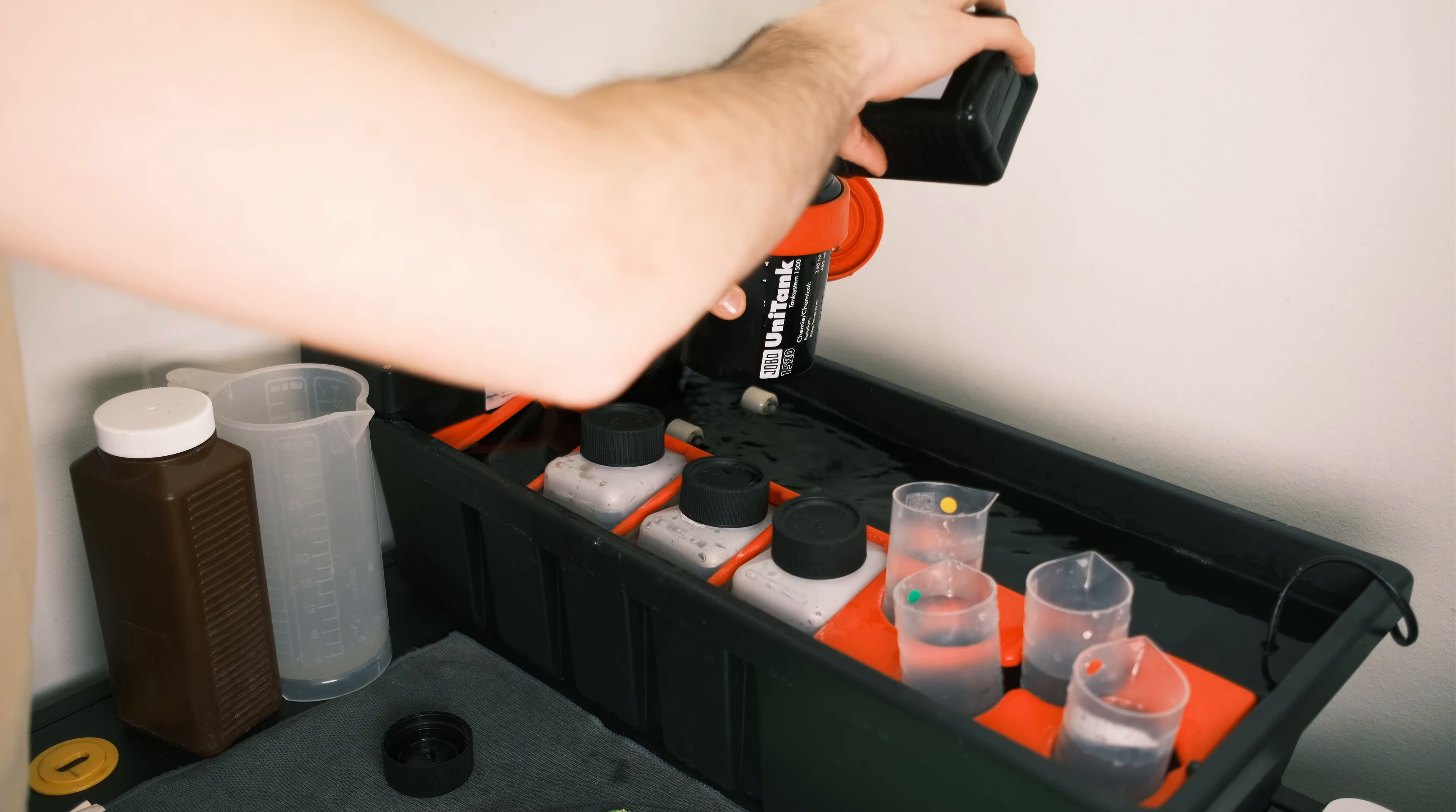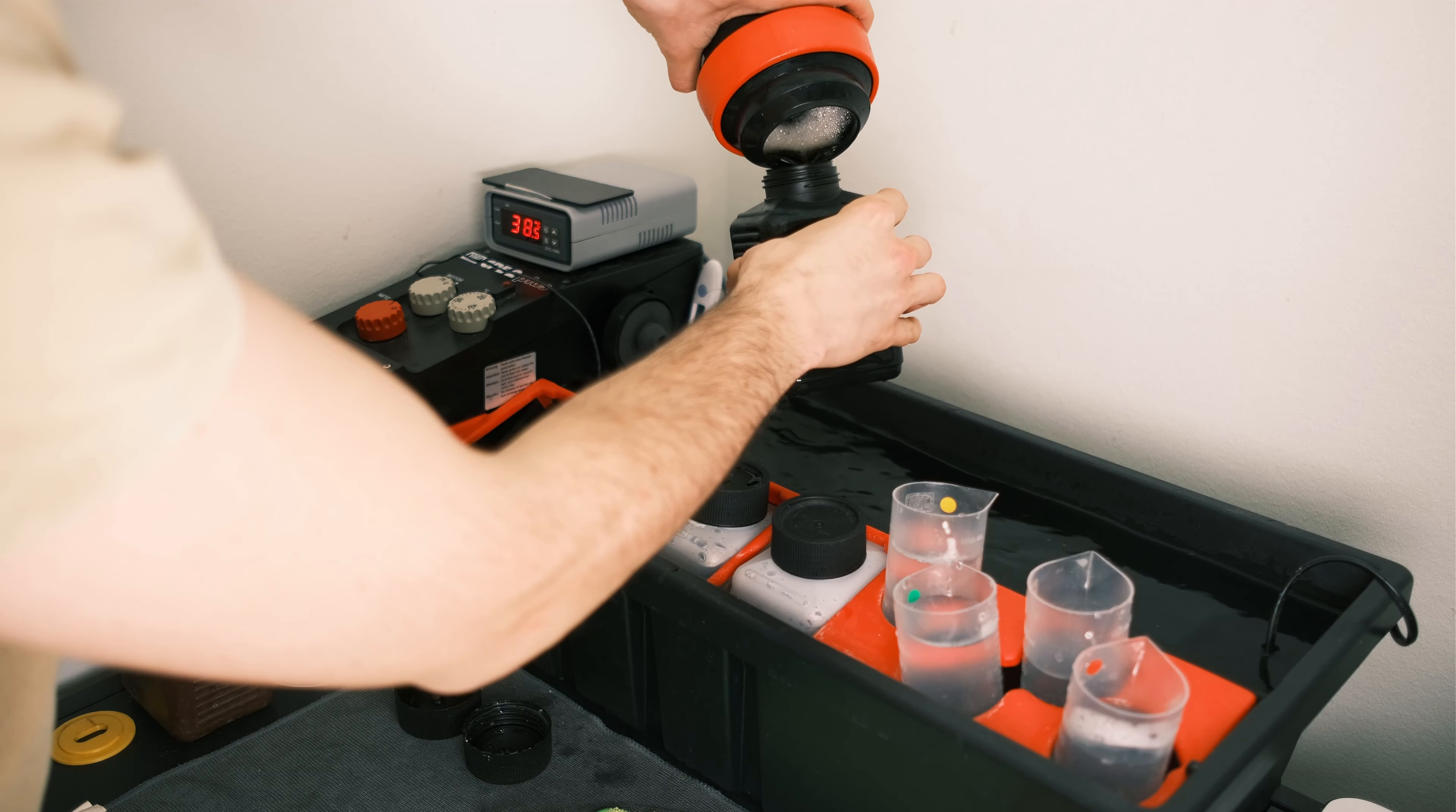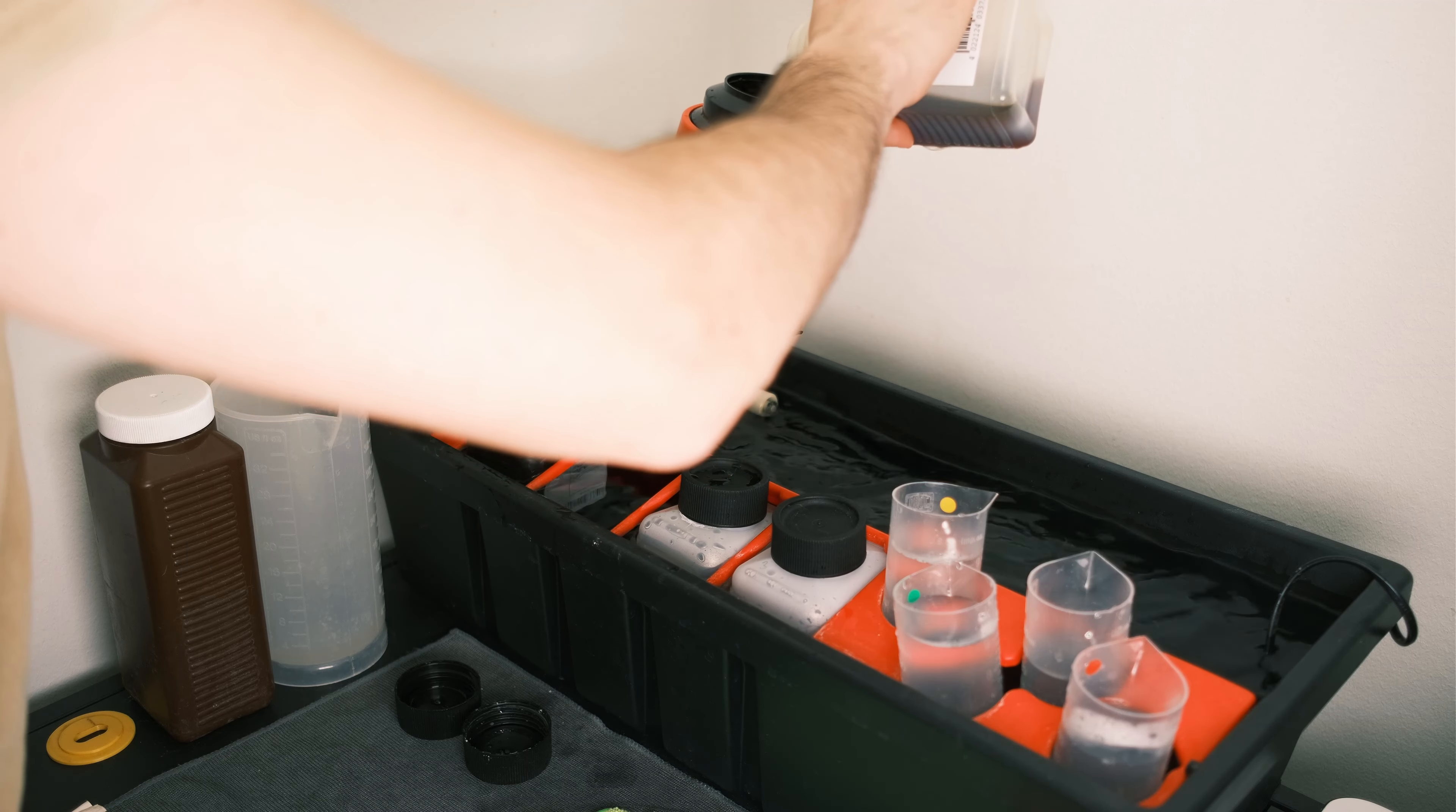And I'm using two flasks with 250 milliliters. And I'm starting with the developer. I pour around 250 milliliters for one film in the drum. And here usually you need to be careful with the bleach fix after you apply the developer. In case of Fuji Hunt, it's only bleach.